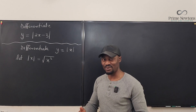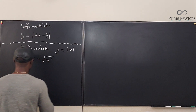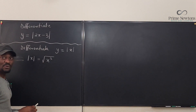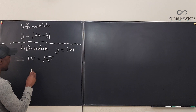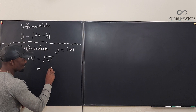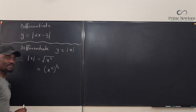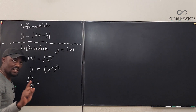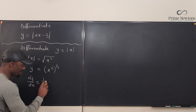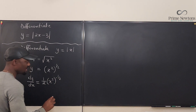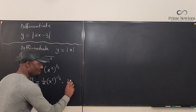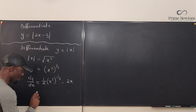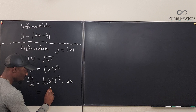The absolute value of x equals the square root of x squared. To make things easy, we write this as x squared raised to the power of one half. So dy/dx, applying the chain rule, is going to be one half times x squared raised to the power of negative one half, multiplied by the derivative of the inside, which is 2x. Cleaning this up gives one over the square root of x squared, multiplied by 2x.